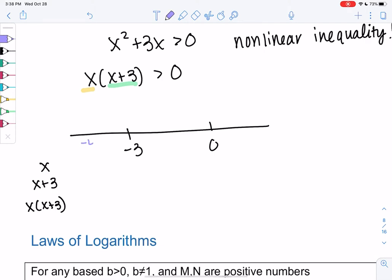So I'll try negative 4. Negative 4 into x gives me a negative. Negative 4 plus 3 is negative. So you combine them and it's positive. Let's try negative 1 in the next interval. So negative 1 is negative. Negative 1 plus 3 is positive. Combine them and you get a negative.